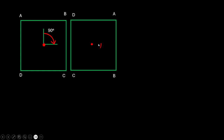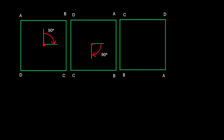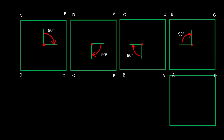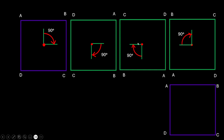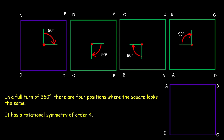Let us rotate this one more time by 90 degrees clockwise — it looks like this. We will do a third rotation by the same angle in the same direction, and it looks like this. After the fourth rotation, it will cover a complete circle of 360 degrees and will be back to its original position. At every rotation, the square looked exactly the same as before rotation. So in a full turn of 360 degrees, there are four positions where the square looks the same. We say that the square has a rotational symmetry of order 4.